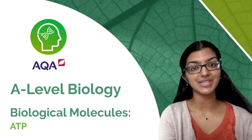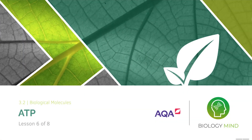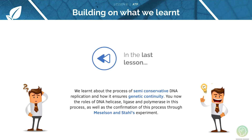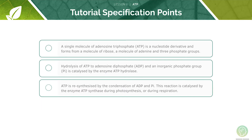We also have helpful timestamps to guide you through the specification. Welcome to lesson six of eight in this tutorial covering ATP — the sixth video in our series of eight lessons on biological molecules. In the last lesson we looked at the process of DNA replication. Here are the key learning objectives for today's lesson: first we will look at the structure of ATP, then at its use and synthesis. Here are the AQA specification points for today's lesson — feel free to pause the video now and read through them quickly before we begin.